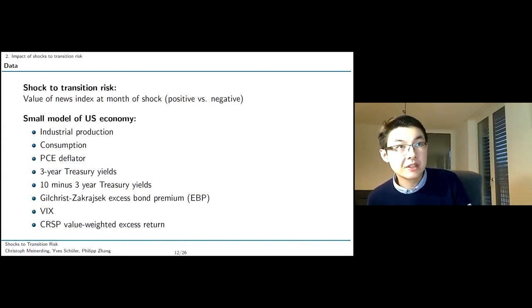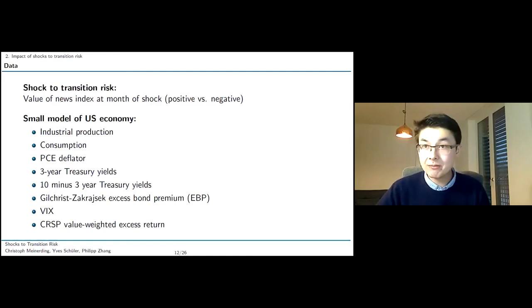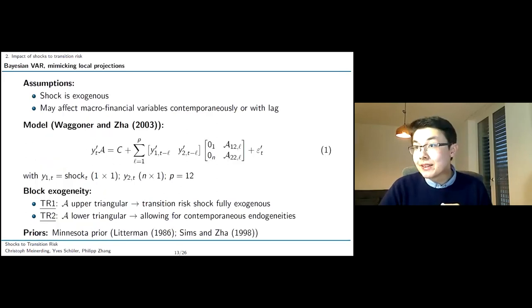This time series is used in a small model of the US economy. We take a standard Bayesian VAR model comprised of eight variables. Basically representing the entire economy, we have industrial production, we have consumption, we have prices in the form of the PCE deflator. We look at the yield curve with three treasury yields. We look at slope, 10 minus three yields. We also include notions of risk premium on the bond market. We have the excess bond premium by Gilchrist and Zakrajšek 2012. We also include the VIX as well as market returns in general.